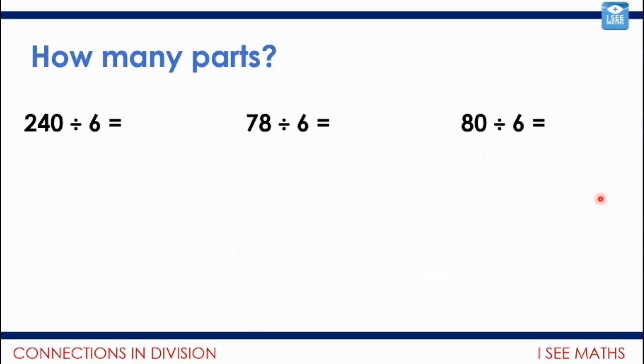So, how many parts? So let's have a look. 240 divided by 6. 78 divided by 6. And 80 divided by 6. How many parts are there when I break those numbers down? Well, for the first calculation, I think I would just keep it as 240. I'll just keep that one part because I know how many 6s are in 240. There are 40. 6 times 40 is 240.